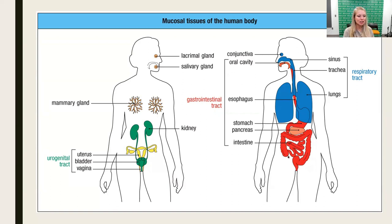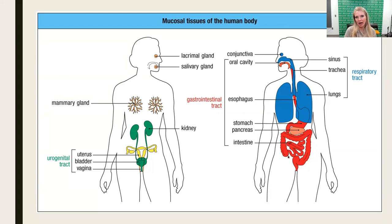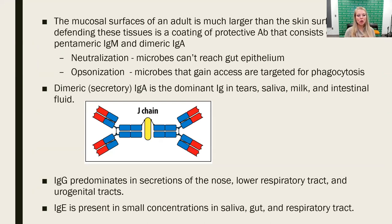Mucosal surfaces include the gastrointestinal tract — oral cavity and respiratory tract — nasal cavity going down into the lungs or stomach and gut. There are also internal tissues: salivary glands, lacrimal glands that make tears, mammary glands that make breast milk, and the kidneys and urogenital tract. These mucosal surfaces are very large — in adults, the total mucosal surface area is actually larger than the skin surface area.